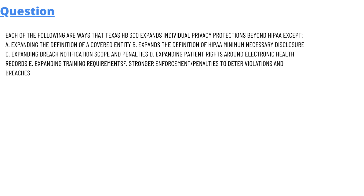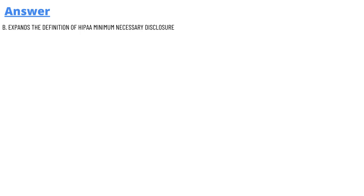Option C, expanding breach notification and scope; Option D, expanding patient rights around electronic health records; Option E, expanding training requirements; and Option F, stronger enforcement penalties to deter violations and breaches.